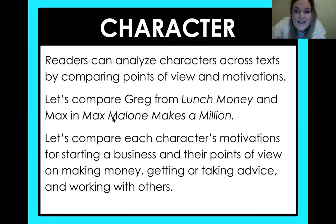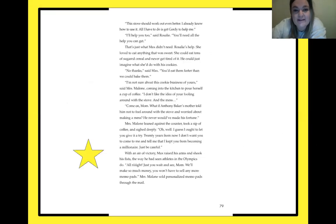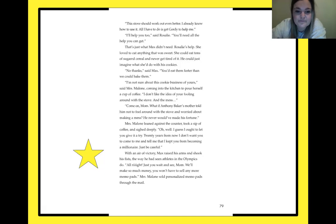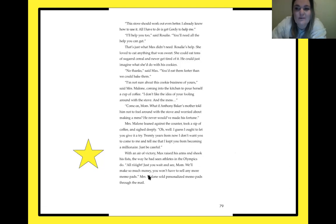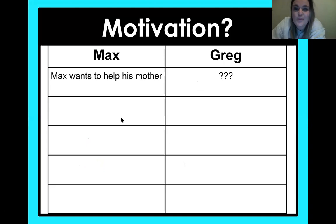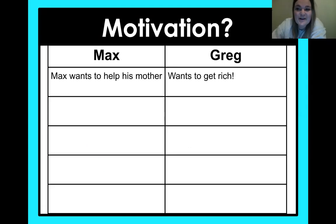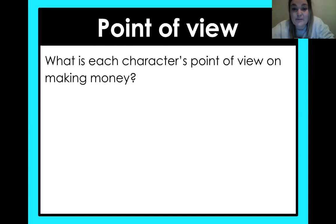The first thing we're going to figure out is their motivation — why did they want to start these businesses? Let's start with Max. Max actually wants to start his business because he said, 'Just you wait and see, Mom. We'll make so much money you won't have to sell any more memo pads.' So Max wants to help his mom. And Greg? Greg wants to get rich. He wants all the money — he doesn't even know why, but he just wants to be rich.